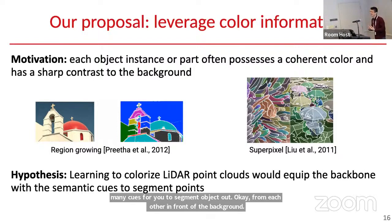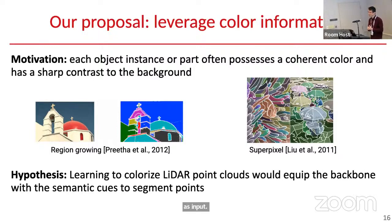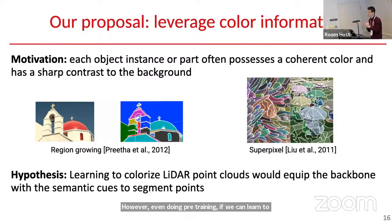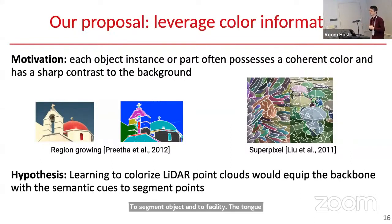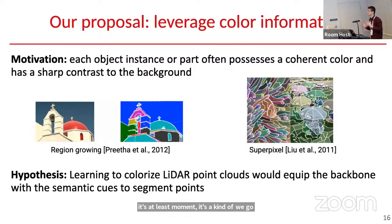Our hypothesis is: even though the 3D object detector will only use LiDAR point cloud as input, if we can learn to colorize the LiDAR point cloud during pre-training, we'll equip the feature backbone with semantic cues to segment objects and facilitate downstream object detection. Our goal is to use colorization as a pre-training objective. It's a pretty simple idea, but there are still some inherent challenges to making it work.